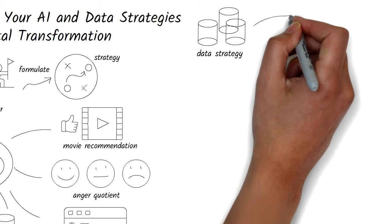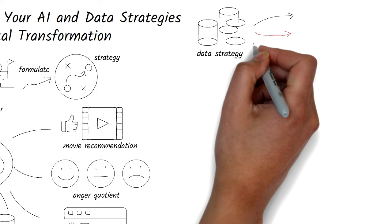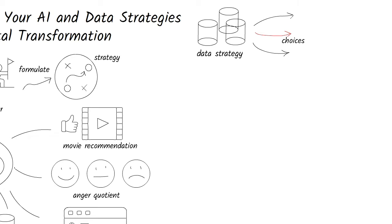As I said earlier, strategy is about picking one among many choices. So, what are our choices for data? Here are a few examples.